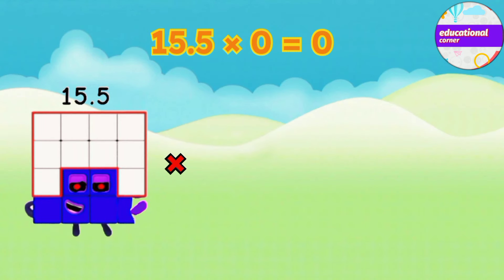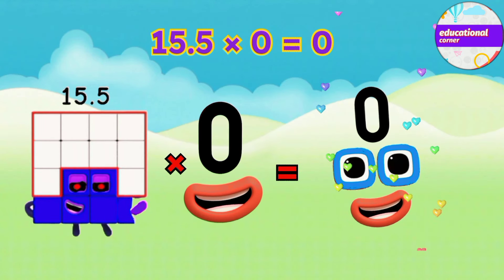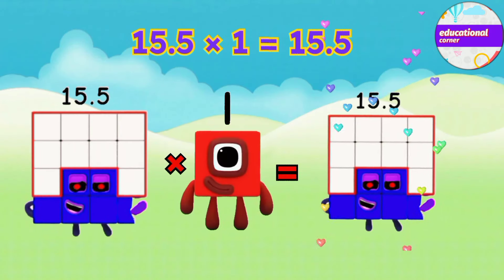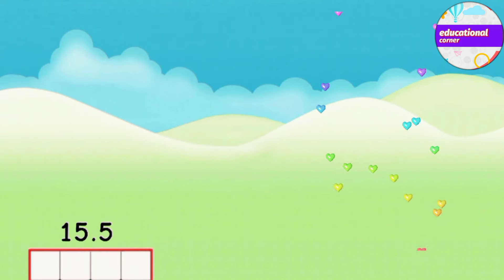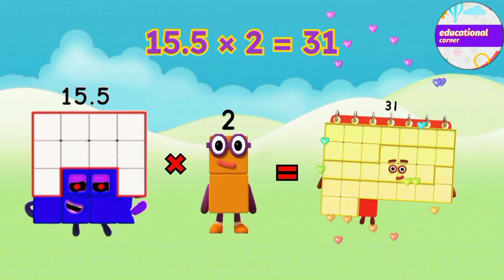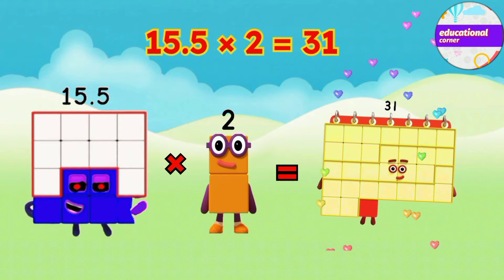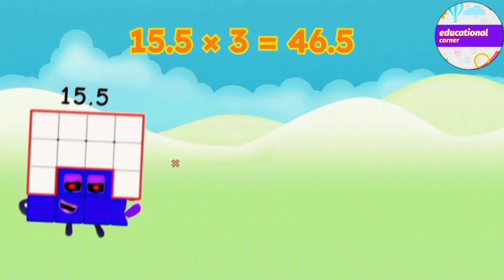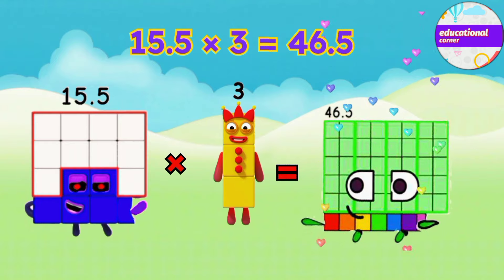15.5 x 0 equals 0. 15.5 x 1 equals 15.5. 15.5 x 2 equals 31. 15.5 x 3 equals 46.5.